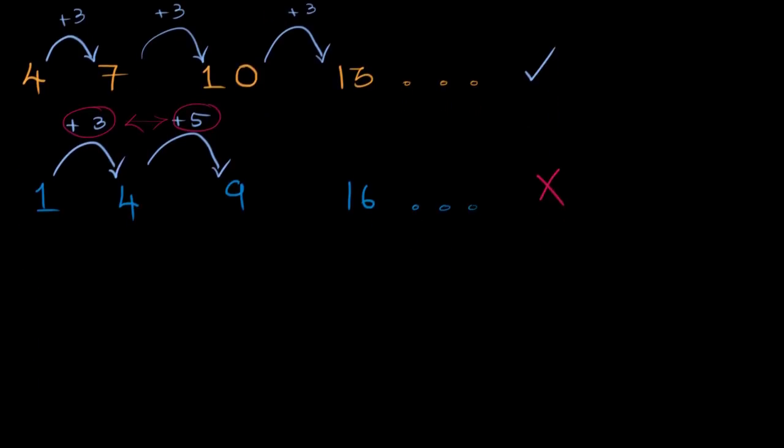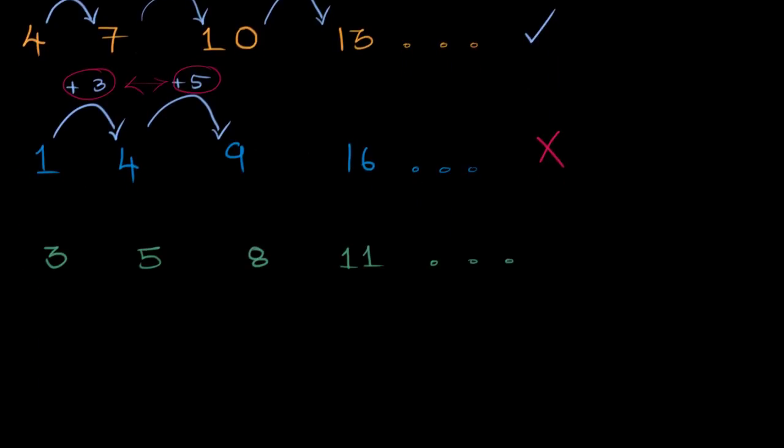Let's see what more we can have. Let's say that we have three, five, eight, 11. Is this an AP? Over here, that jump size is two plus two. Over here, it's plus three. That's it. I'm done. I don't need to check any further. I know that this is not an AP. So not an AP.